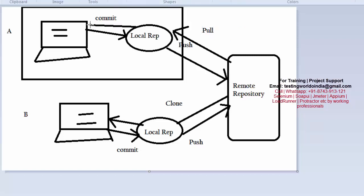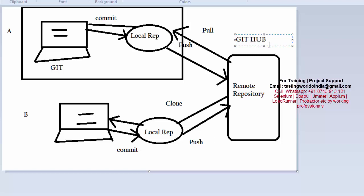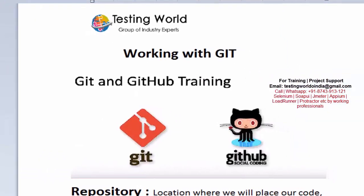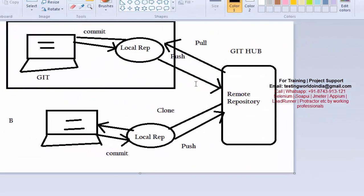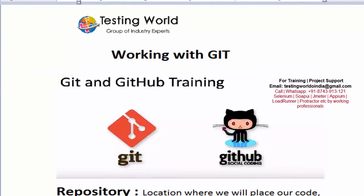So that's the overall process. Git works on local machines, and GitHub is the web-based repository hosting service where we create remote repositories. In this session we covered what Git is and what GitHub is. Next, I'll show you how to create an account on GitHub and how to start working with Git. That's all for this session — thanks for watching.